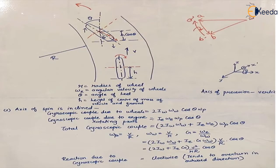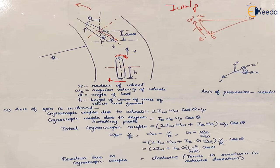The wheels are moving in the clockwise direction and the viewer is at the rear end. Now the first thing we have to calculate is the effect because of the gyroscopic couple due to wheels. There are two rotating parts: the wheel and the rotating parts of the engine. The formula for gyroscopic couple is I * omega * omega_p. In case of wheels, it will be I_w; angular velocity of wheels is omega_w and angular velocity of precession is omega_p.